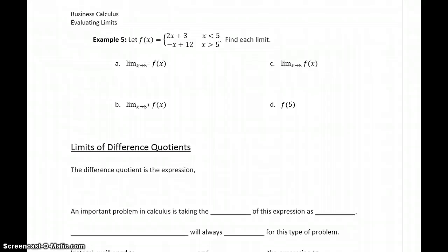For a function like we have in Example 5, f of X is defined to be 2X plus 3 when X is something less than 5. When X is greater than 5, the function is defined as negative X plus 12.